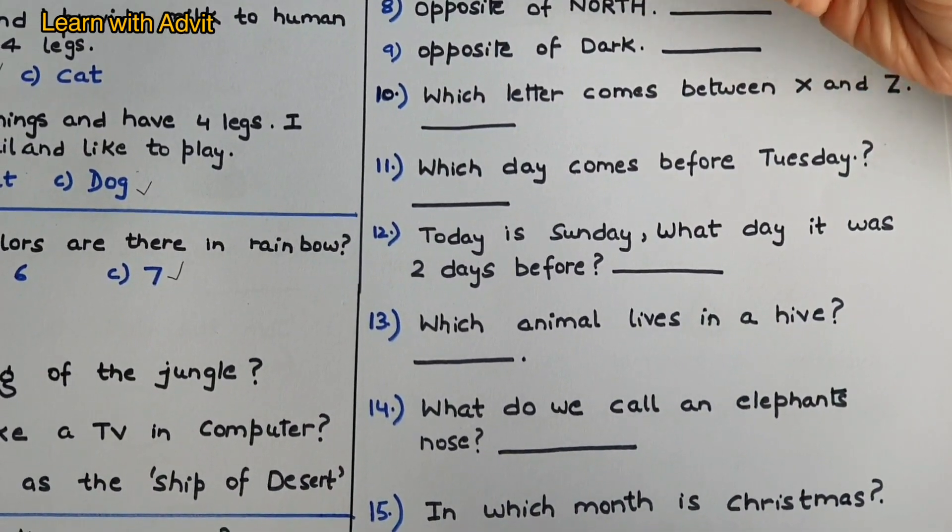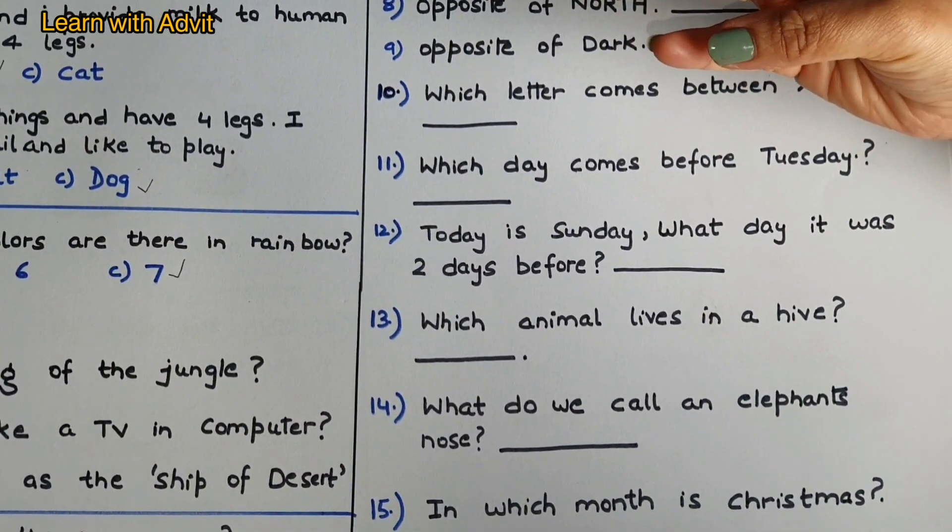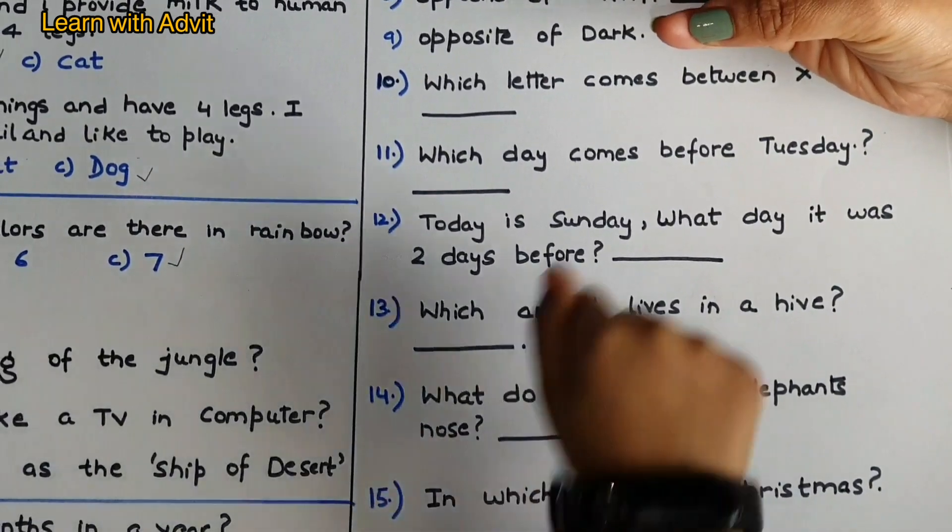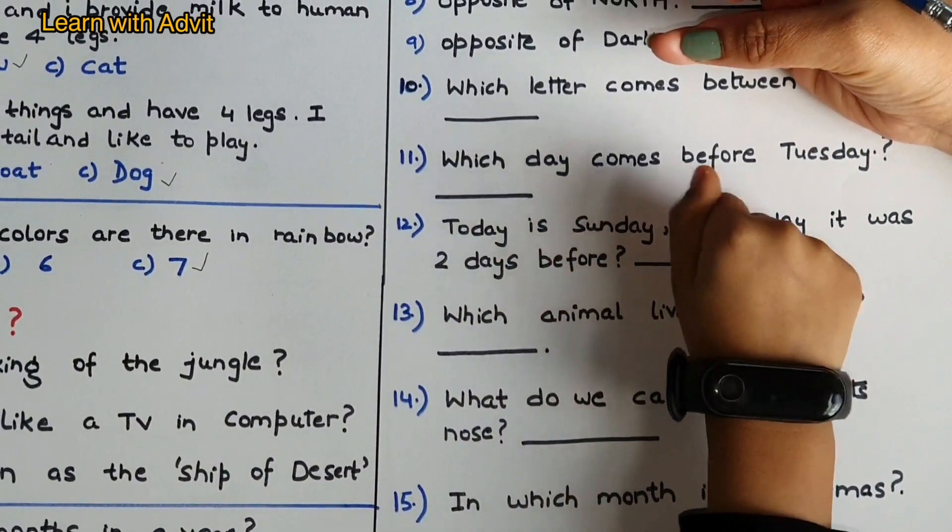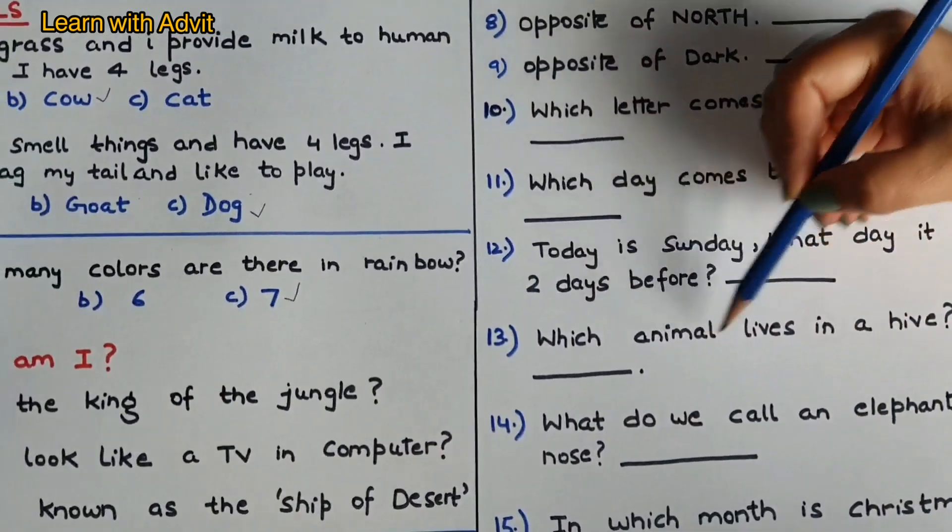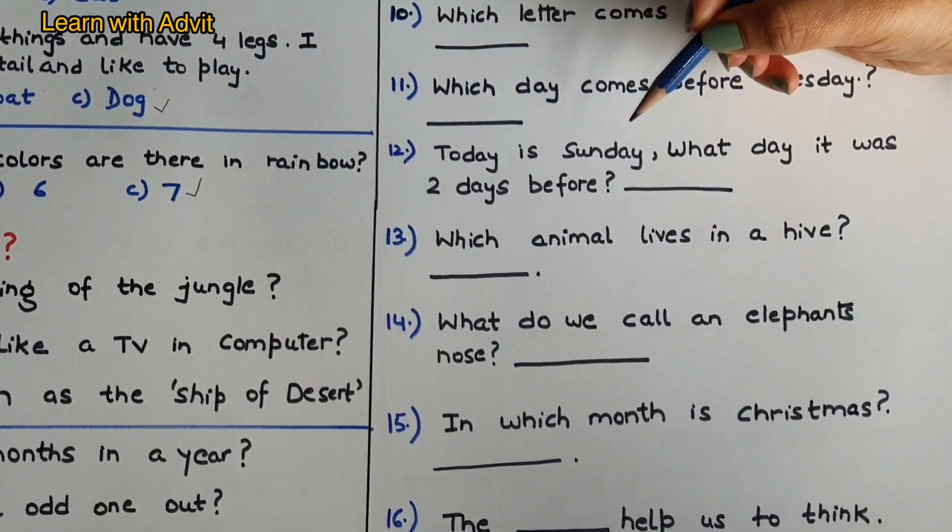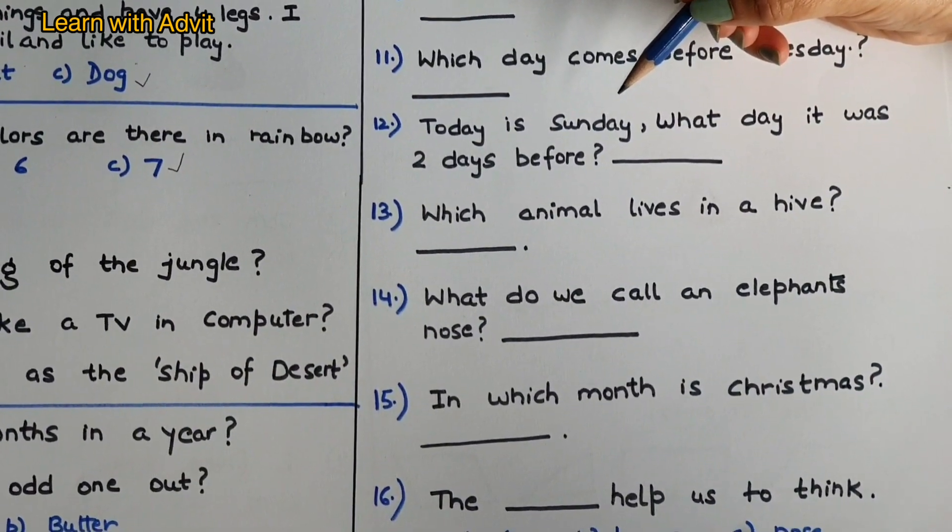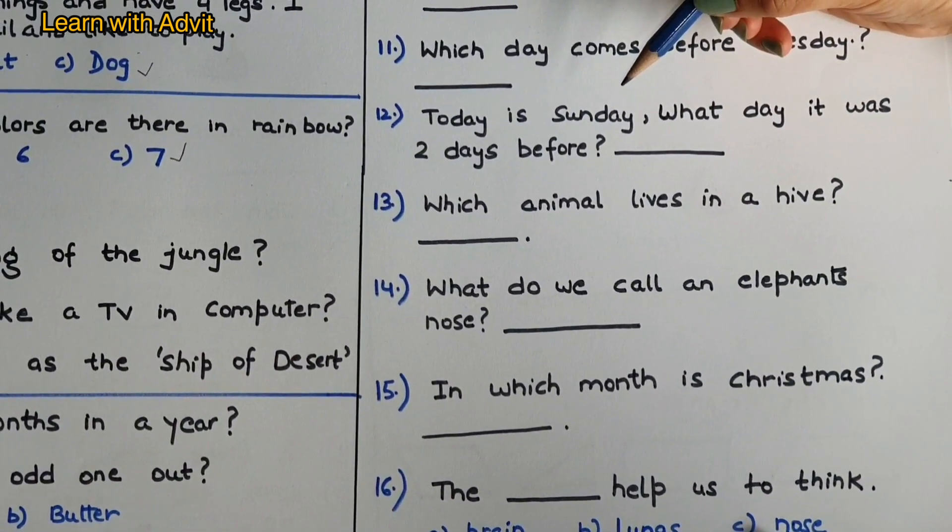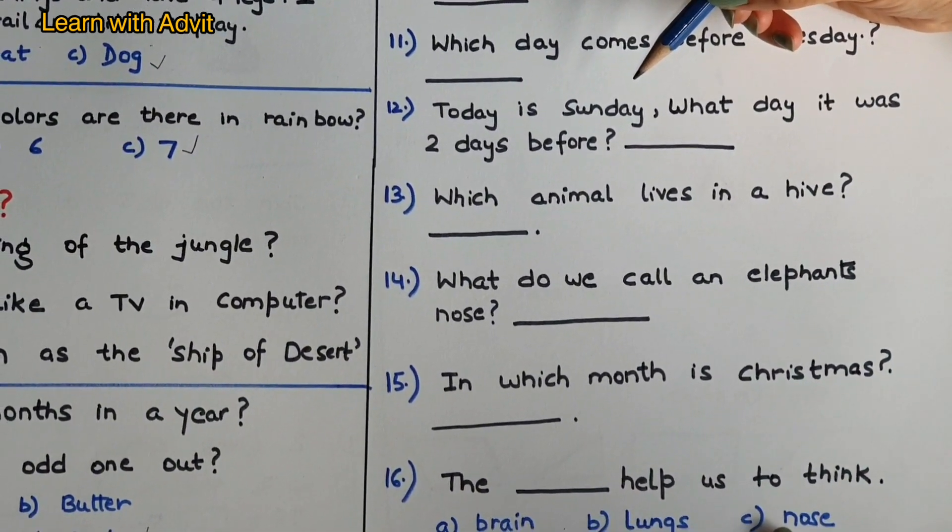Today is Sunday, and what day it was two days before Sunday? Saturday? Friday? Thursday, yeah. So answer is Thursday. Which animal lives in a hive? Bee.